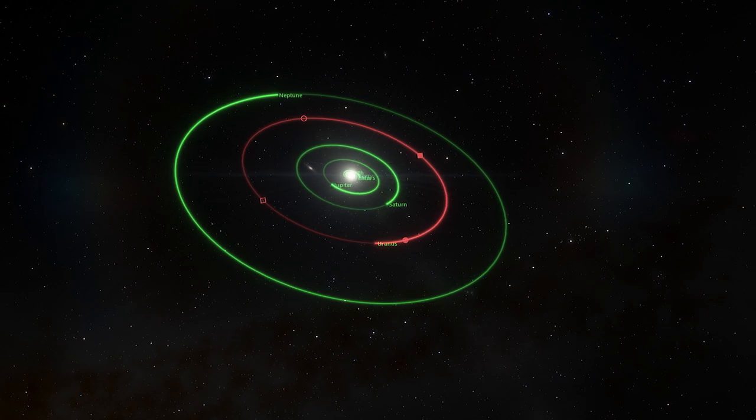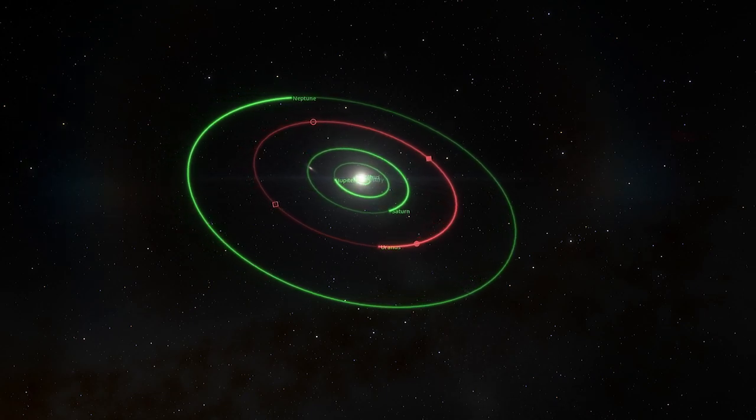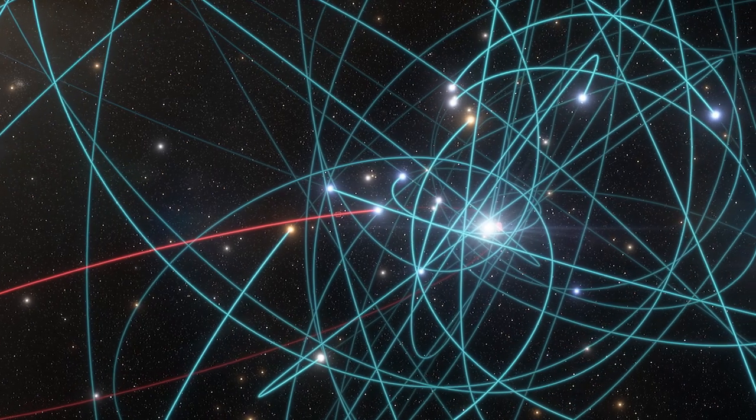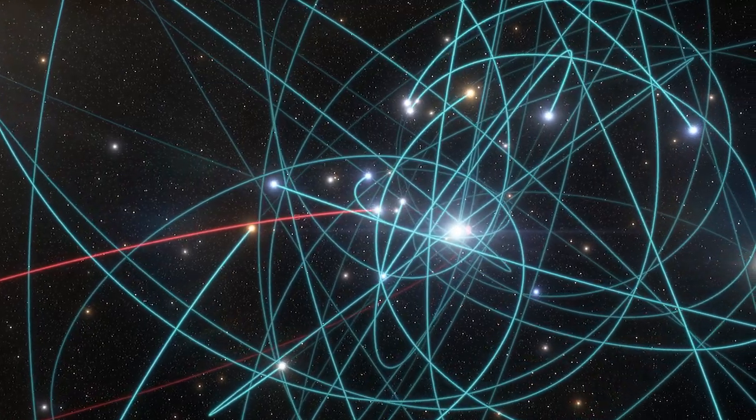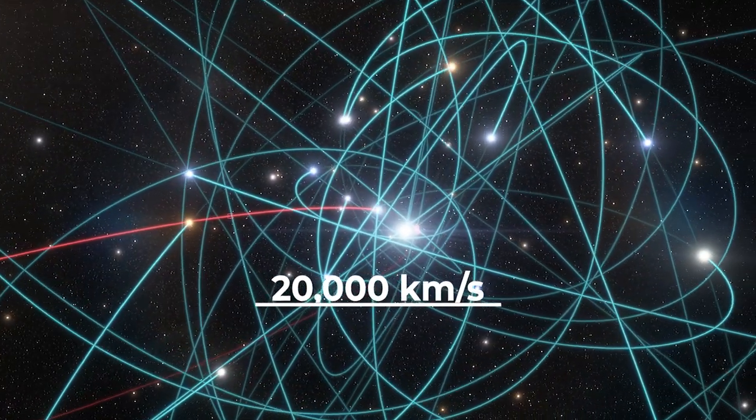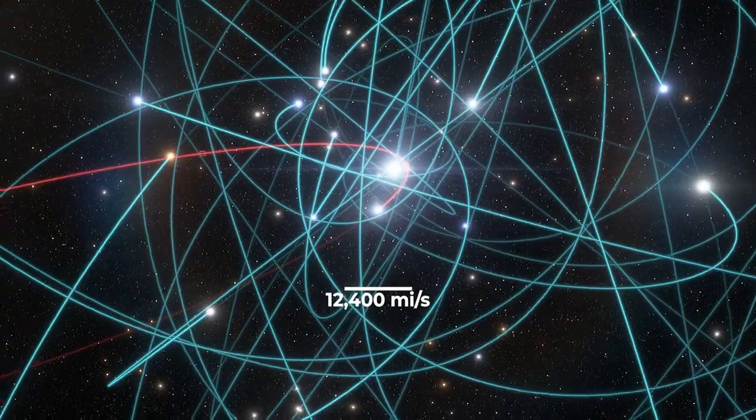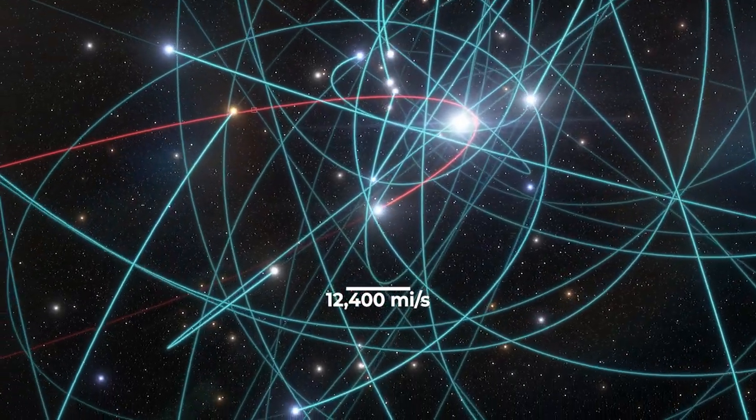That's closer than the average distance between Uranus and the Sun. As it orbits around, it reaches velocities of 20,000 kilometers per second, or 6.7% of the speed of light.